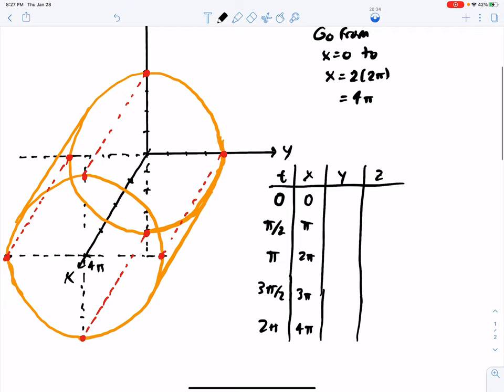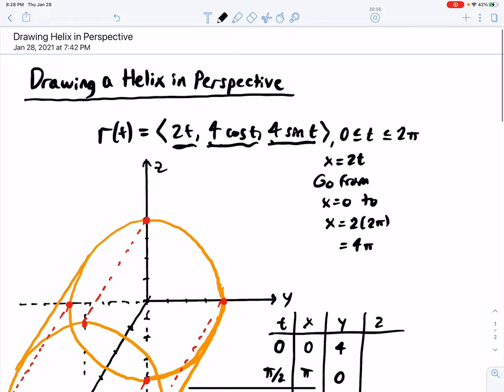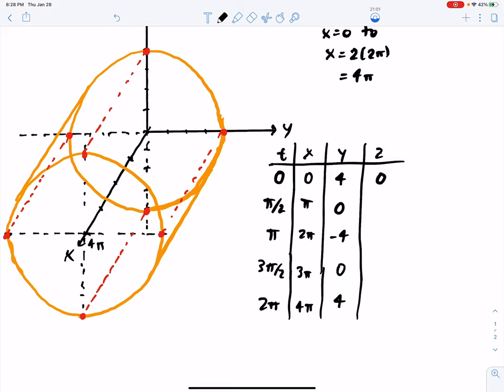Now what will the y's do? 4cosine(t), cosine starts at its crest, we'll get a value of 4, quarter of the way through the period at 0, halfway through the period it's negative 4, three-quarters of the way through the period it's 0, and then all the way through the period we're back at 4. For the z, the sine starts at 0, and then the crest is at 4. Then back to the x-axis, then a negative 4 at its trough, and then we go back to 0 when we get to 2π.